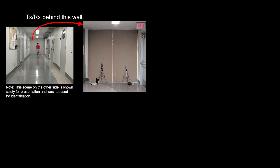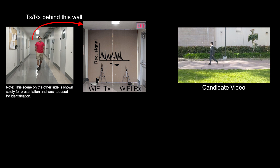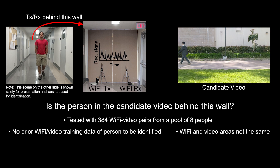Let's first see some experimental results. Consider this area where a pair of Wi-Fi transceivers are inserted outside behind the wall. The left figure then shows what is on the other side of the wall. Given a video footage of a person from a different area, Cross Modal ID then decides if the person in the Wi-Fi area is the same as the one in the candidate video. We have run several experiments in this room with different people. Cross Modal ID achieves an identification accuracy of 83% in this area.